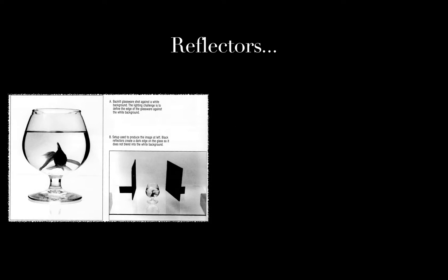There's a second type of reflector — a black reflector — used when you're photographing something clear. In this glass we have a fish floating. If we didn't have those black reflectors on the sides, the glass would disappear into the background. By having black reflectors, I'm using them to help define the edge of something that doesn't really have color. Reflectors are just there so you know about them — you don't have to use them, but I have a couple you can borrow if you need to.